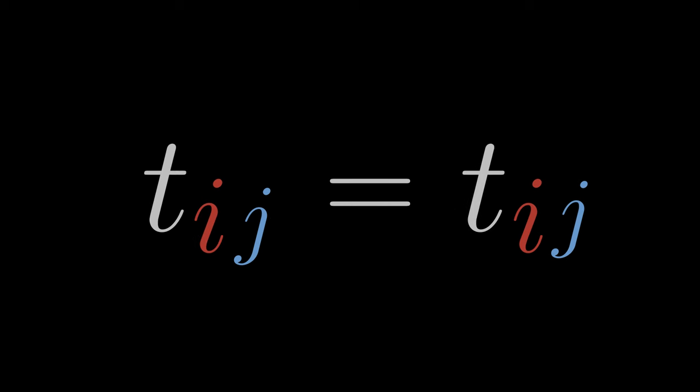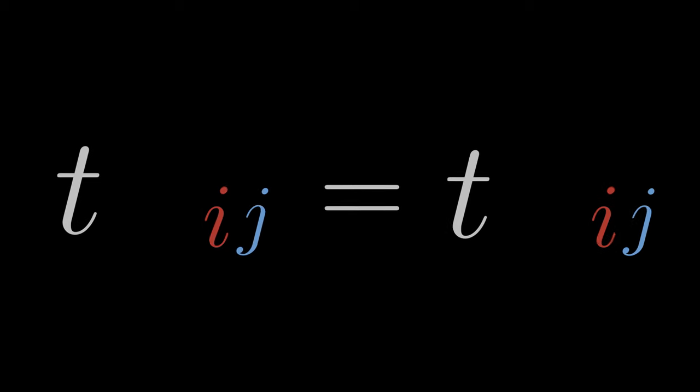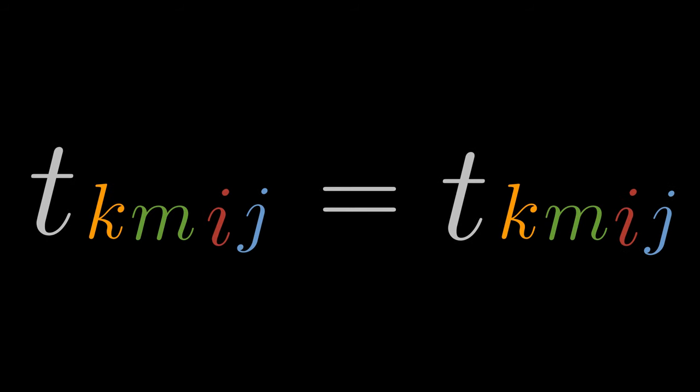We have considered a second-order tensor. What if the tensor is of a higher order? What about its symmetry property then? For example, if the tensor has four indices and it remains equal when we swap the first two indices, then we are talking about a symmetric tensor in the indices M and K.